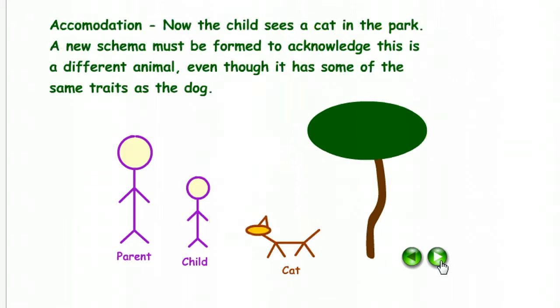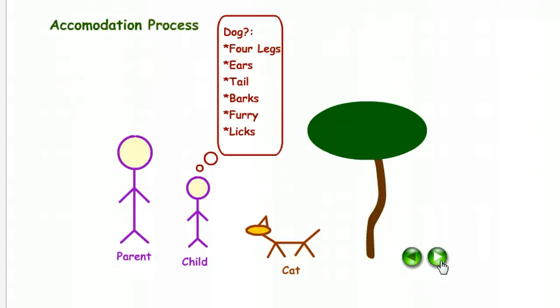Now we have accommodation. So now the child sees a cat in the park. A new schema must be formed to acknowledge that this is a different animal, even though it has some of the same traits as a dog. So the child sees this animal walking around. It goes down the checklist: four legs, ears, tail.